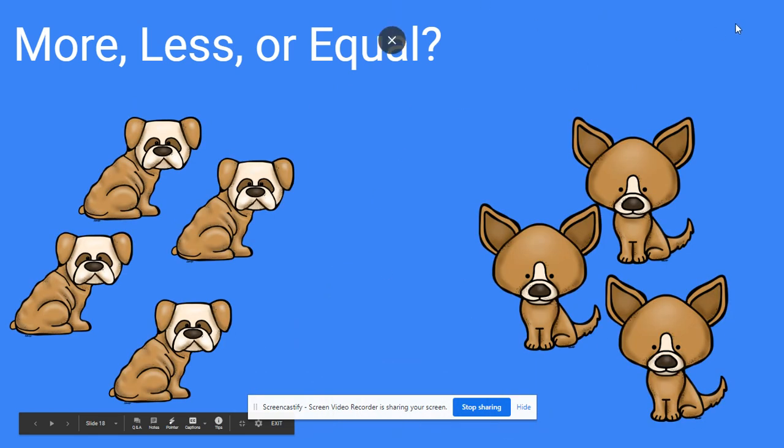All right, let's look at these dogs. Now, which group of dogs has more? Which group of dogs has more? This group of dogs has more because there are four dogs over here and three dogs over here.